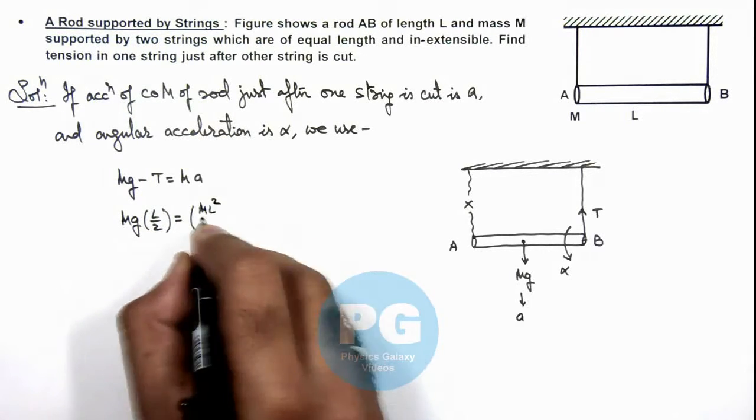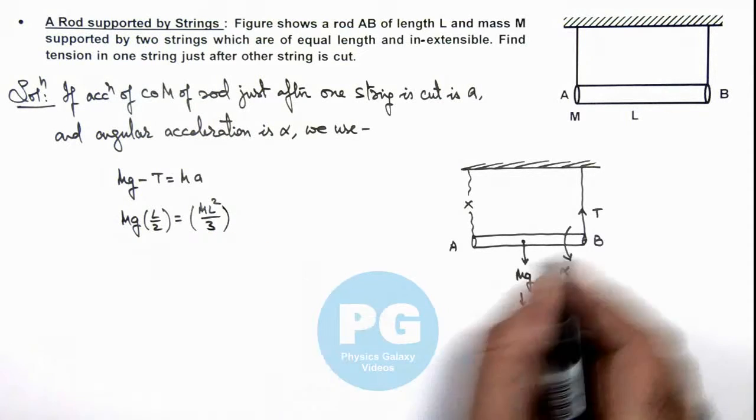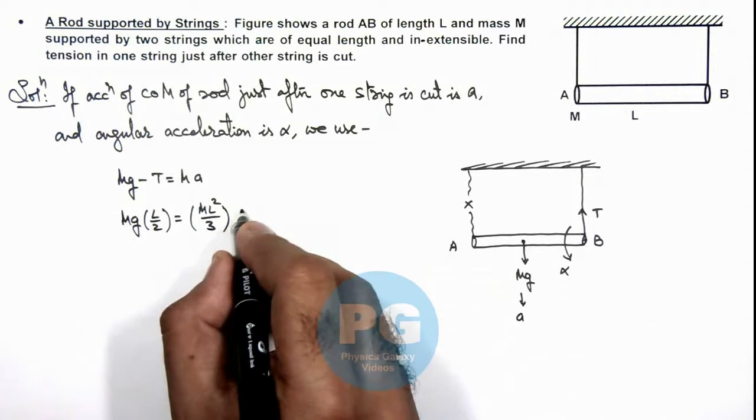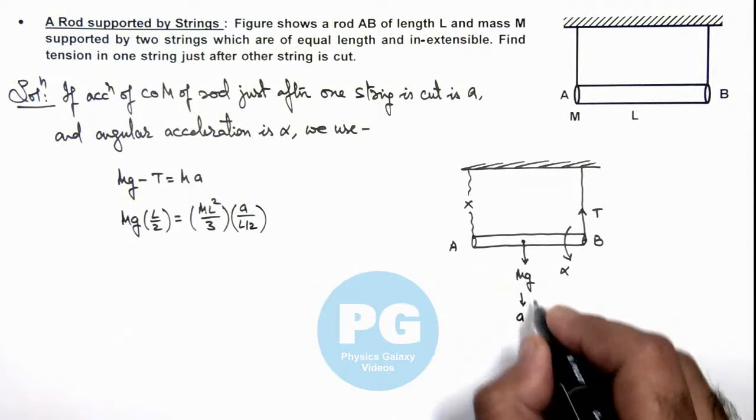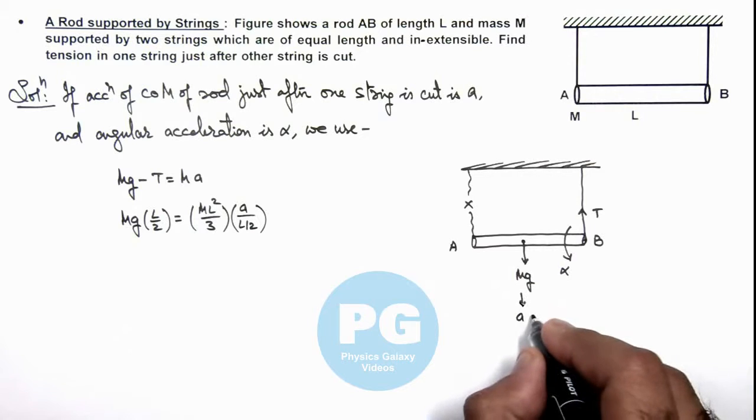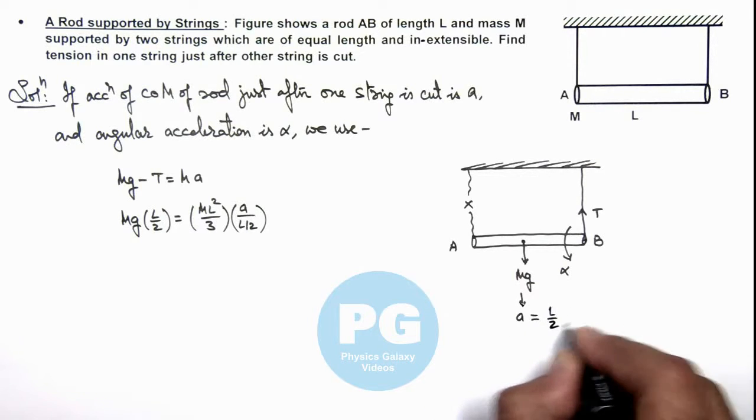...multiplied by its angular acceleration will be a upon L/2 in this case, because the acceleration of center of mass we can write as (L/2)·alpha.